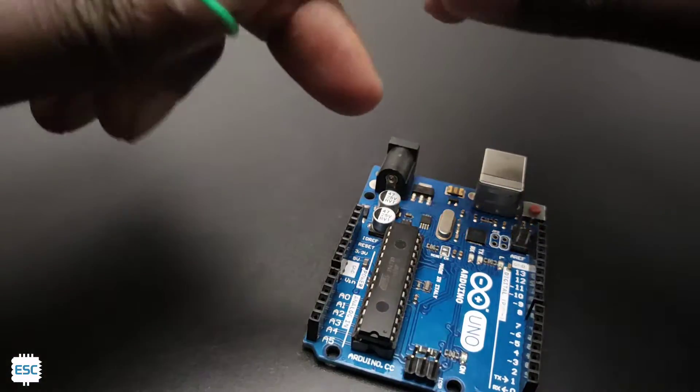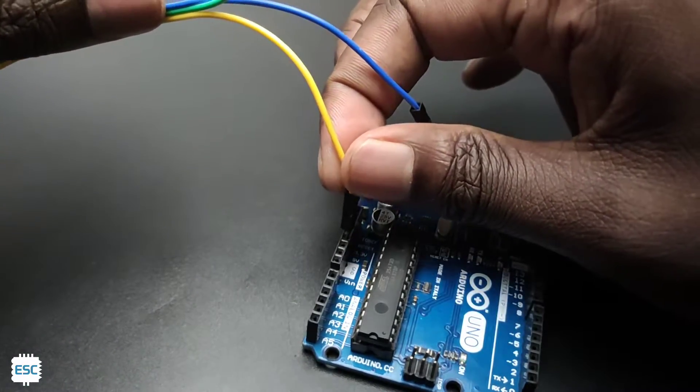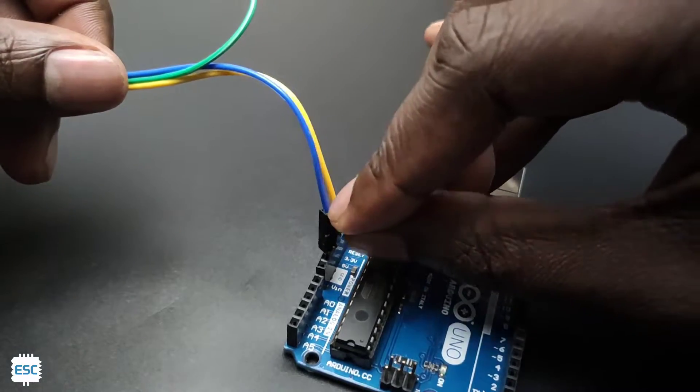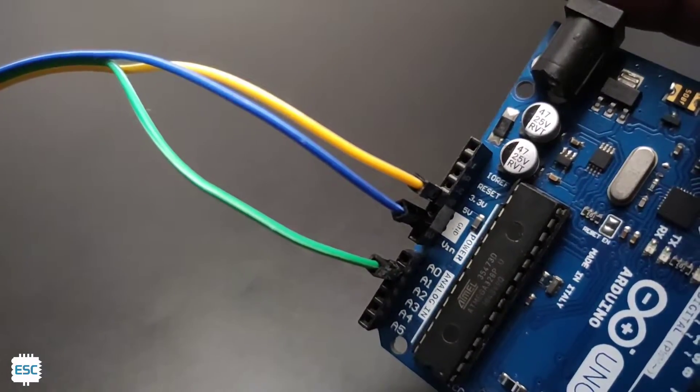First, let's see how to calibrate the sensor. For that, connect the VCC to 5V of Arduino, ground to ground and the analog pin to A0 pin of Arduino. And that's it.